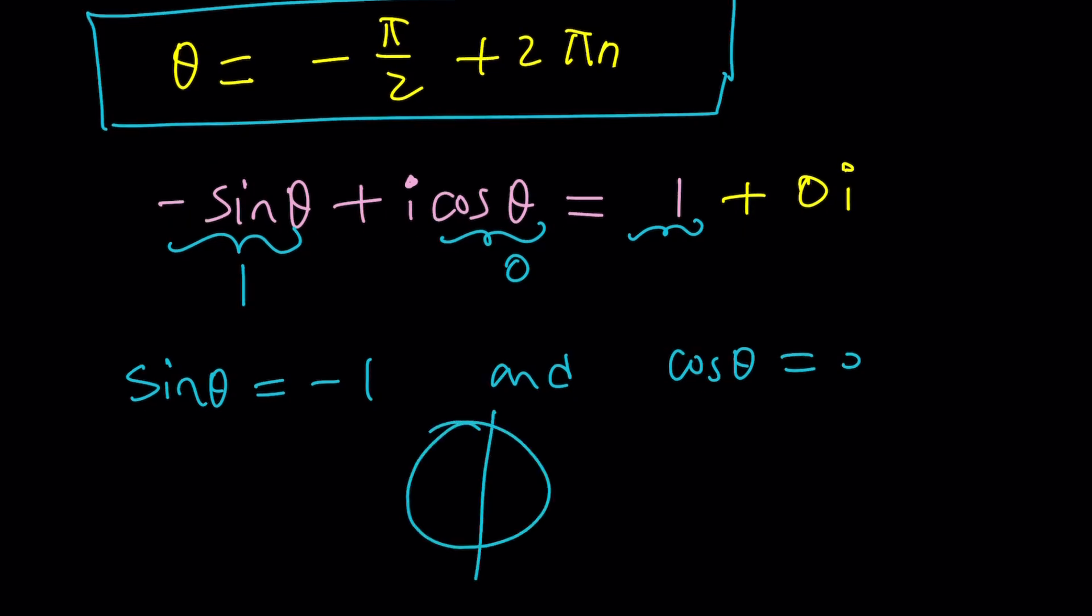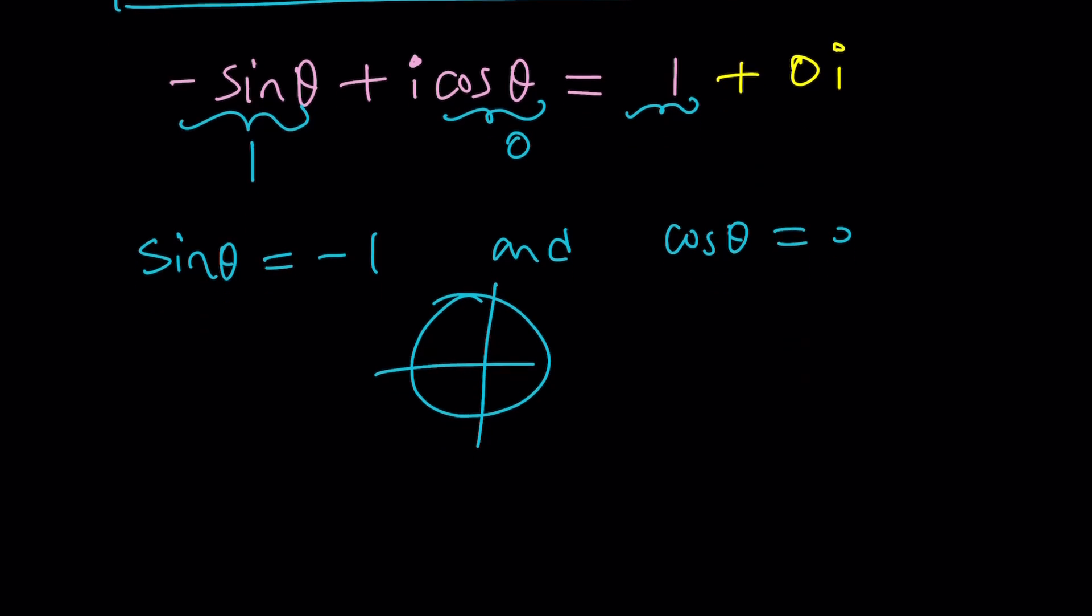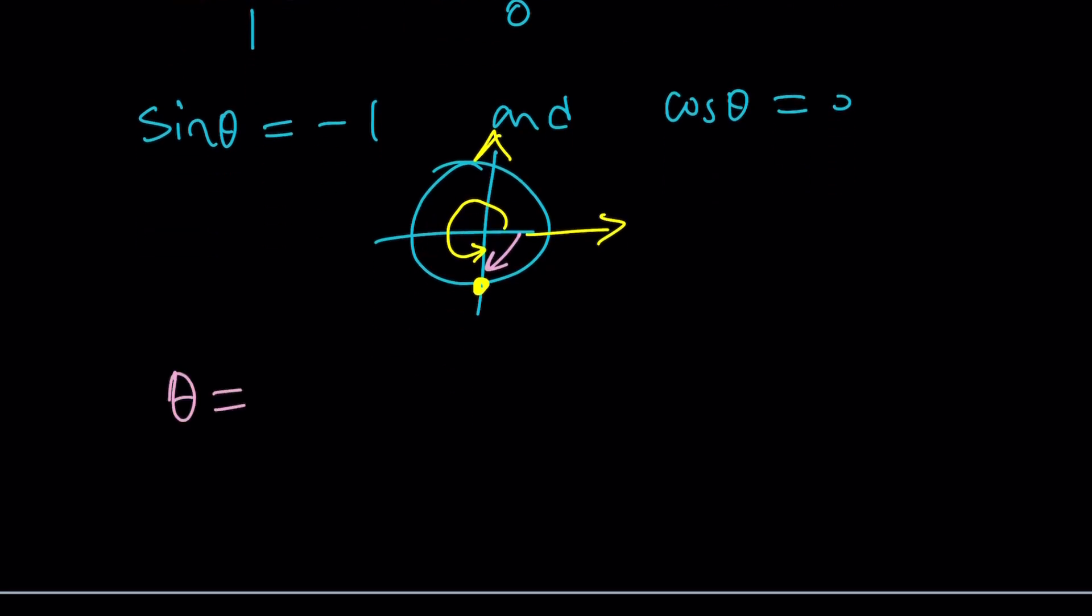Now I'm thinking about my unit circle, and my unit circle knowledge kind of tells me that we are here. You know how you have those things at the shopping malls, like, you are here? And then you try to find your way out, but it's usually very hard. So we're talking about 3π/2, or negative π/2, depending on how you look at it. I'm going to go the negative route, because that's what we did with the first method.